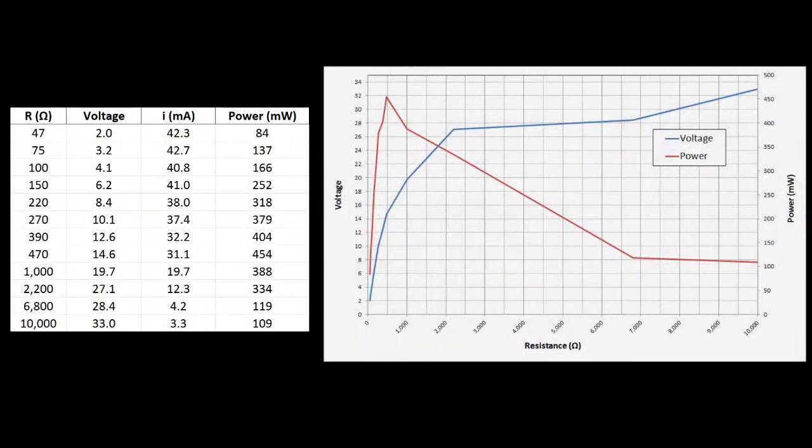I tested the generator with a bunch of different resistor values as loads and measured the voltage, which you can see here. The best I managed to get was about 500 milliwatts with a 500 ohm load. And while that's not great, considering my first generator only put out about 2 milliwatts, this is about 250 times better.